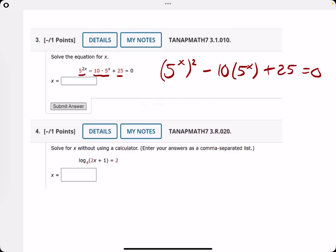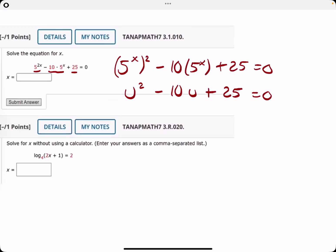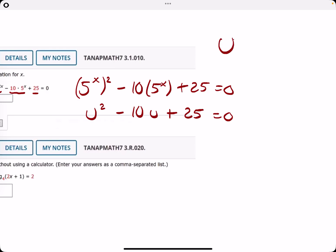And this structure very much matches like a quadratic situation where we have u is equal to 5 to the x. So we make that substitution. 5 to the x, we will replace with u. And then we'll just factor this like we would normally. When we factor that, we get u minus 5 and u minus 5.